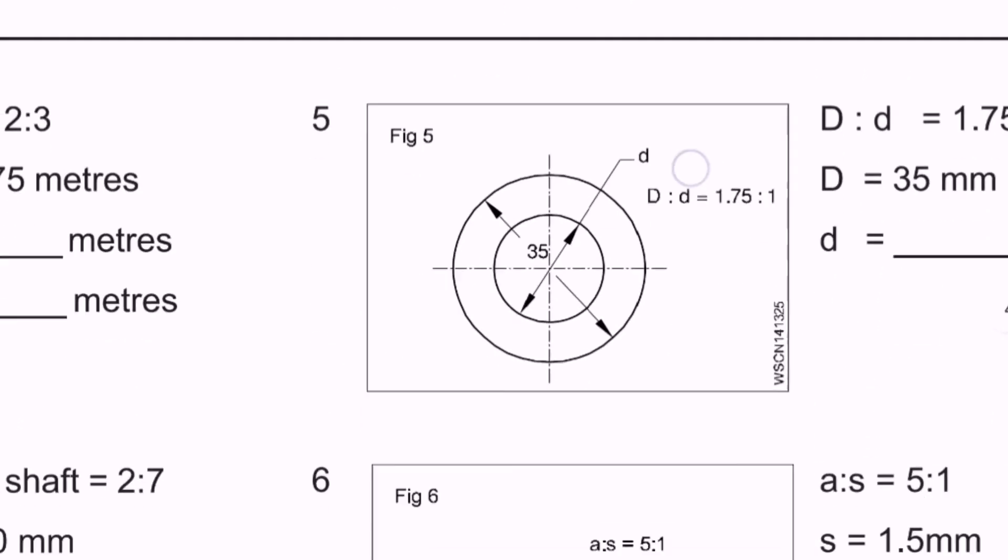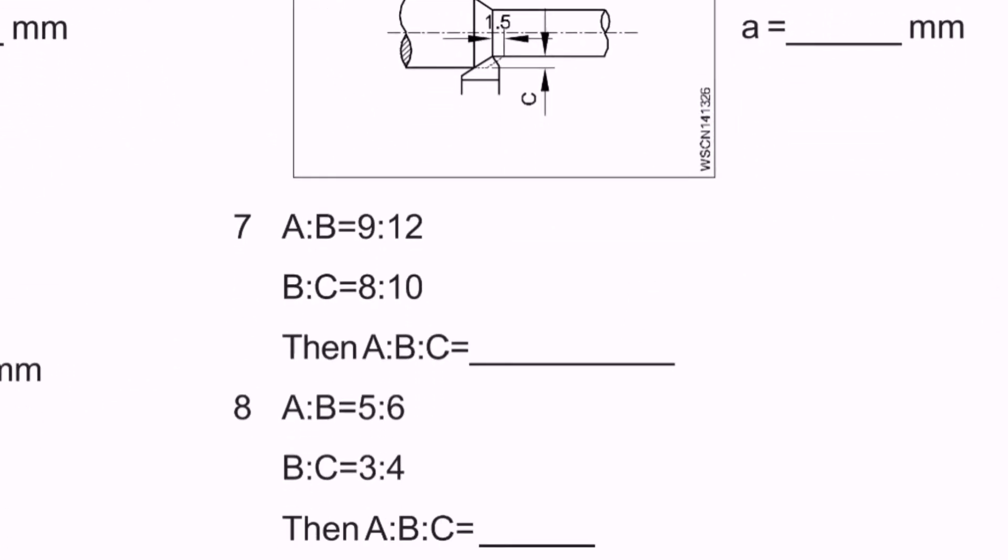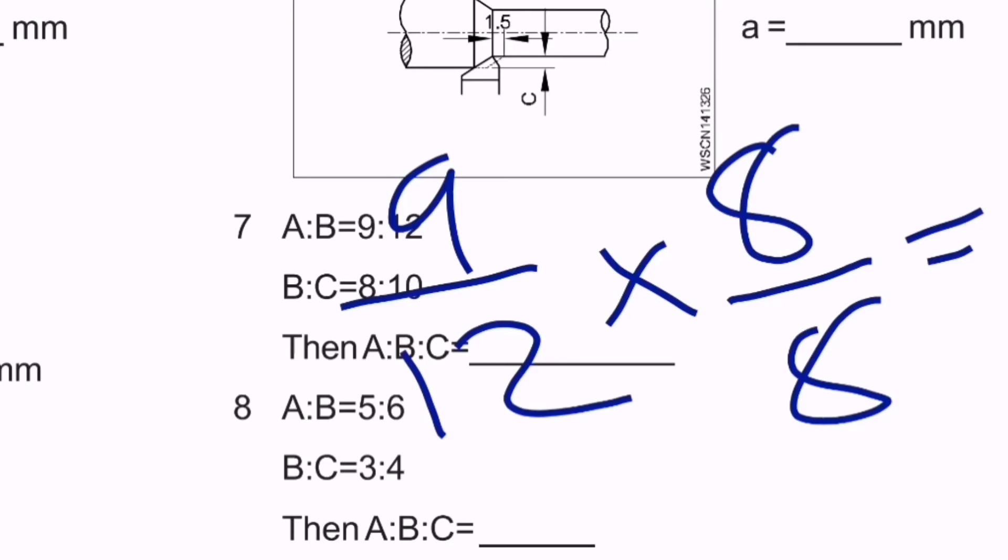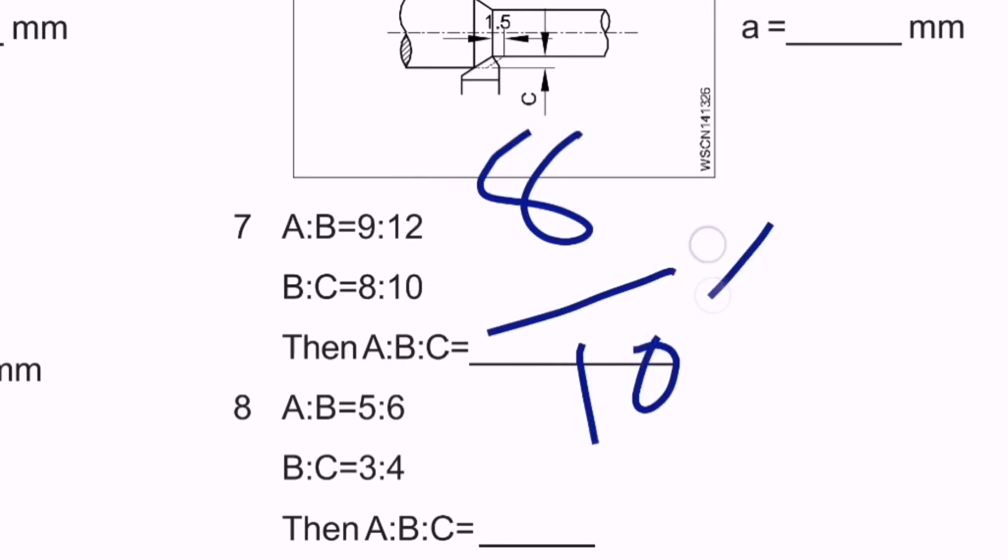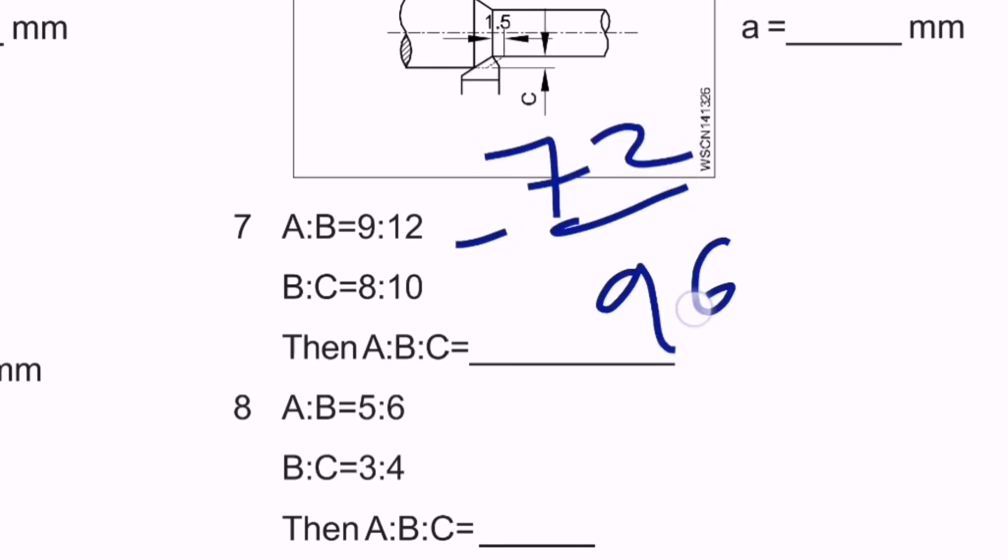Same procedure for question 7. A:B is 9:12 and B:C is 8:10. We multiply the complete values: 9/12 times 8/8, and 8/10 times 12/12. The values are 72/96 and 96/120.